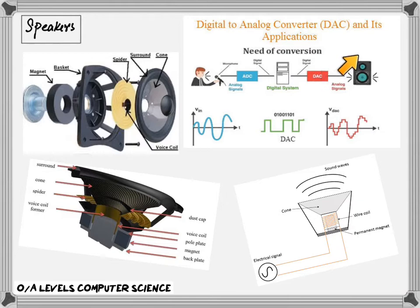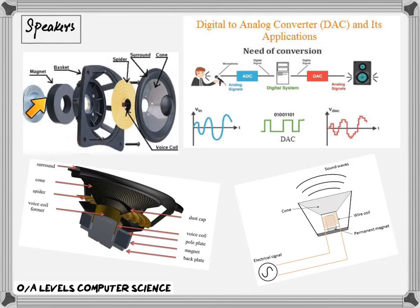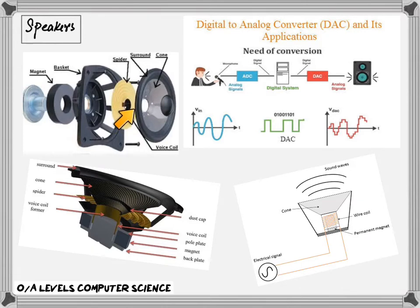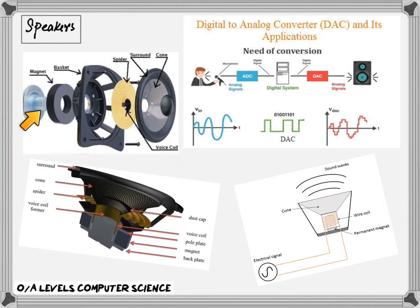When the electric current flows through a coil of wire that is wrapped around an iron core, the core becomes a temporary electromagnet. A permanent magnet is also positioned very close to the electromagnet. As the electric current through the coil of wire varies, the induced magnetic field in the iron core also varies. This causes the iron core to be attracted towards the permanent magnet, and as the current varies, this will cause the iron core to vibrate.